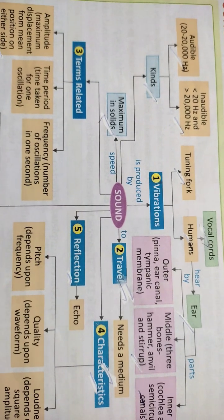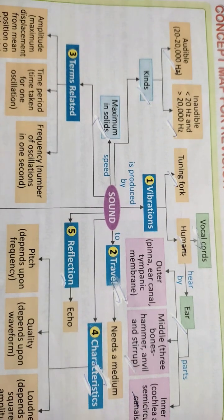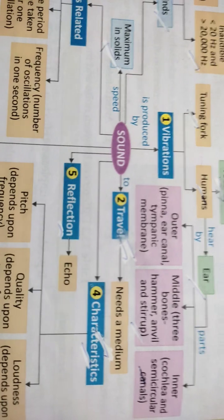Sound is basically produced due to vibration. In humans, vibration of vocal cords produces sound, and humans hear by ear. The ear has parts: outer, middle, and inner.